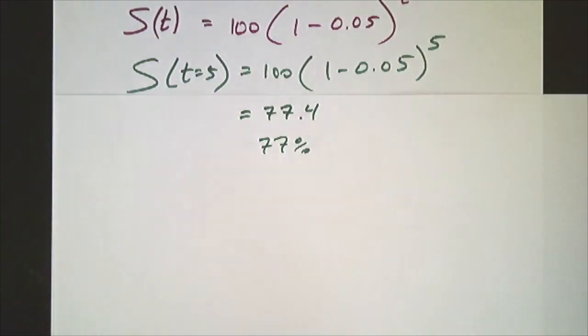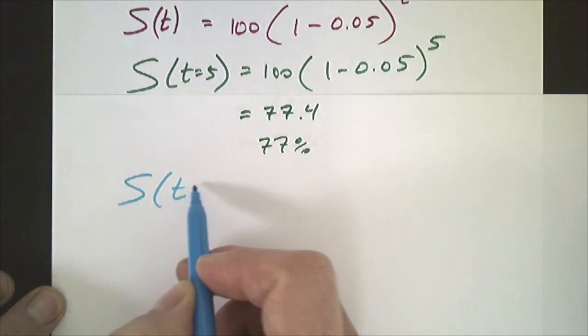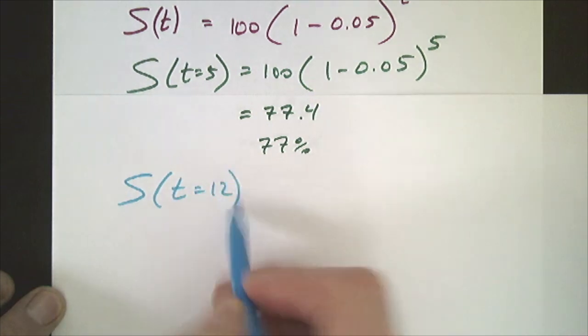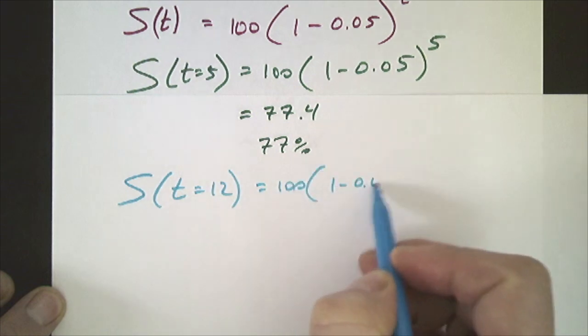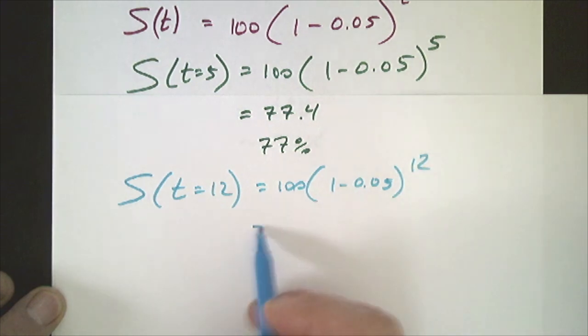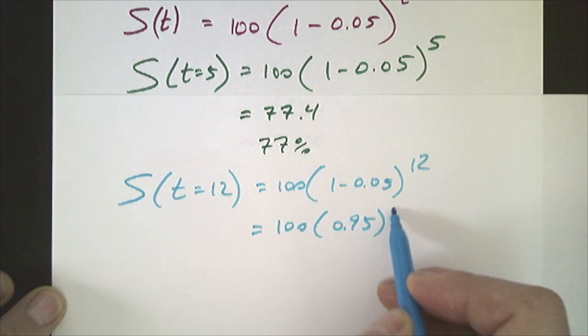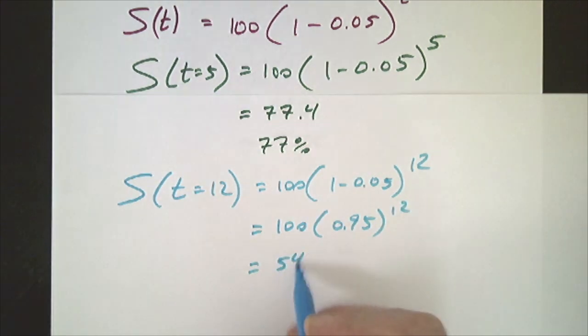So if you are gone for one year, miss them for one year, that would be 12 months. 100 times 1 minus 0.05 for 12 months, that's 100 times 0.95 to the 12th. That works out to be 54.0 or 54%. You're about half happy.